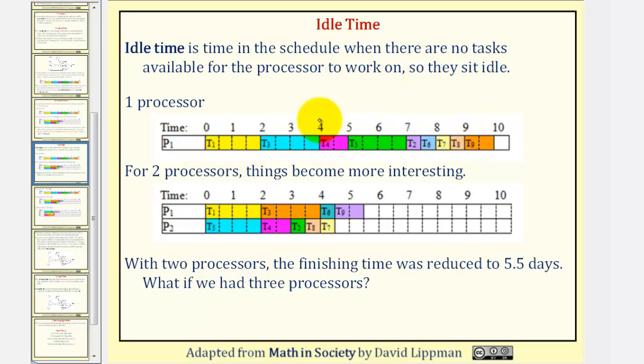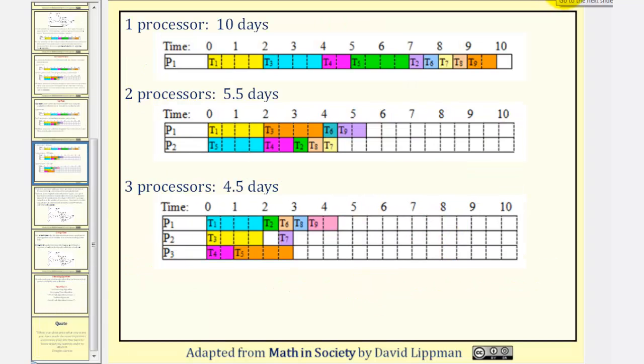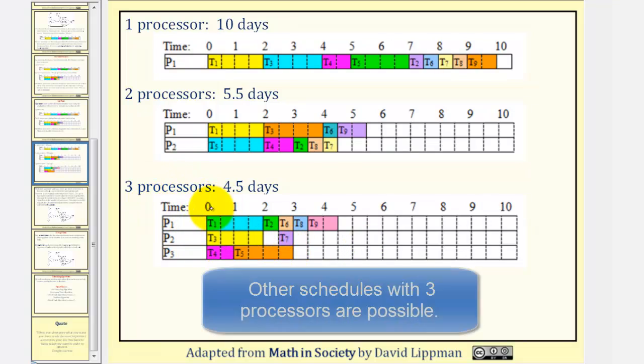Now that we've seen it would take ten days for one processor and five and a half days for two processors, let's see what would happen if we had three processors. Here's a possible schedule for three processors. Notice for three processors, it takes four and a half days.